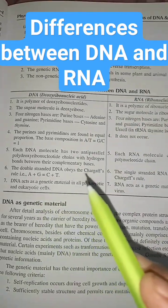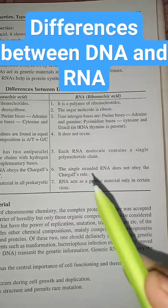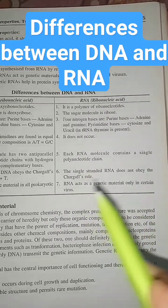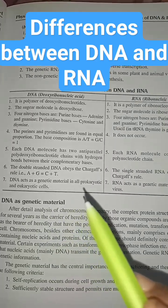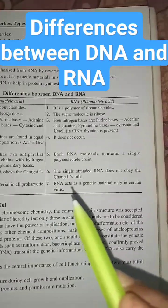The double-stranded DNA obeys Chargaff's rule. The single-stranded RNA does not obey Chargaff's rule. DNA acts as genetic material in all prokaryotes. RNA acts as genetic material.